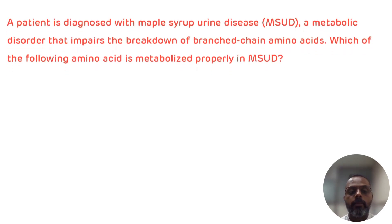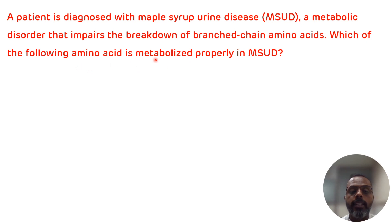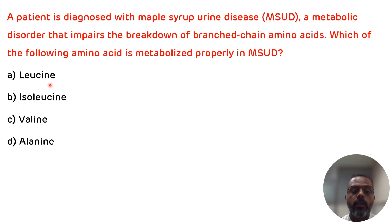Today's multiple-choice question is: a patient is diagnosed with Maple Syrup Urine Disease, a metabolic disorder that impairs the breakdown of branched-chain amino acids. Which of the following amino acids is metabolized properly in Maple Syrup Urine Disease? The options are: leucine, isoleucine, valine, and alanine.